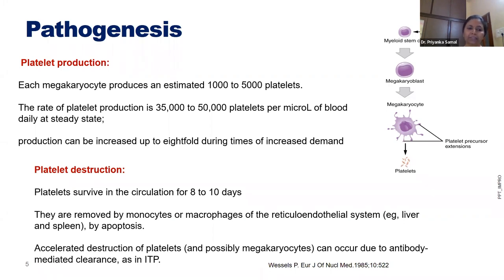Regarding platelet destruction: platelets survive 8 to 10 days in circulation and are removed mostly by monocytes and macrophages of the reticuloendothelial system, and sometimes by apoptosis. Accelerated destruction occurs when there is antibody-mediated clearance, as in ITP. When a patient of immune thrombocytopenia presents, they usually have a count of less than 10,000, which the CBC counter may report as approximately 1,000–2,000.